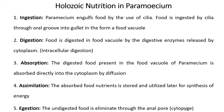In Paramecium, food is engulfed using cilia and ingested through the oral groove in the form of a food vacuole. Second, intracellular digestion converts complex food like proteins and carbohydrates into simple forms — amino acids, glucose, and glycogen. For absorption, digestion of food occurs in the food vacuole by the process of cyclosis. For assimilation, absorbed nutrients are stored and utilized later for synthesis of ATP, the energy-rich molecule. For egestion, undigested food material is eliminated through the anal pore called the cytoproct. These five steps occur in the intracellular digestion of Paramecium, which is called holozoic type of nutrition.